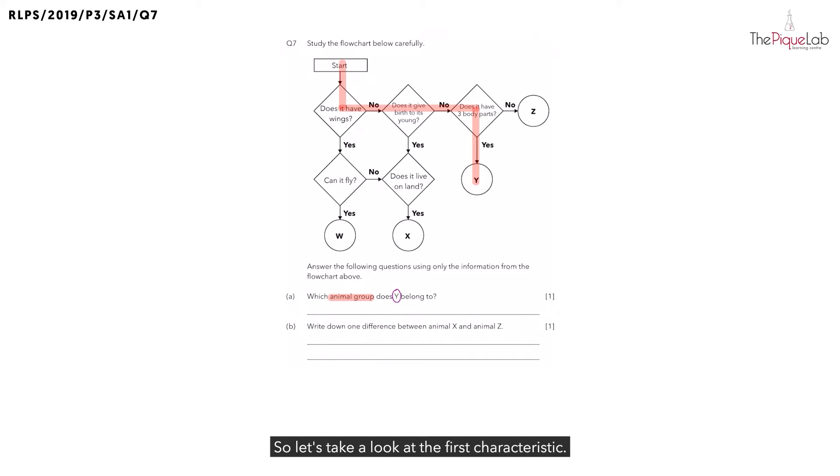So let's take a look at the first characteristic. We know that Y does not have wings. Is that unique to any animal group? No, in fact there are many animal groups that do not have wings. So is this characteristic useful? No, so let's move on to the next characteristic.